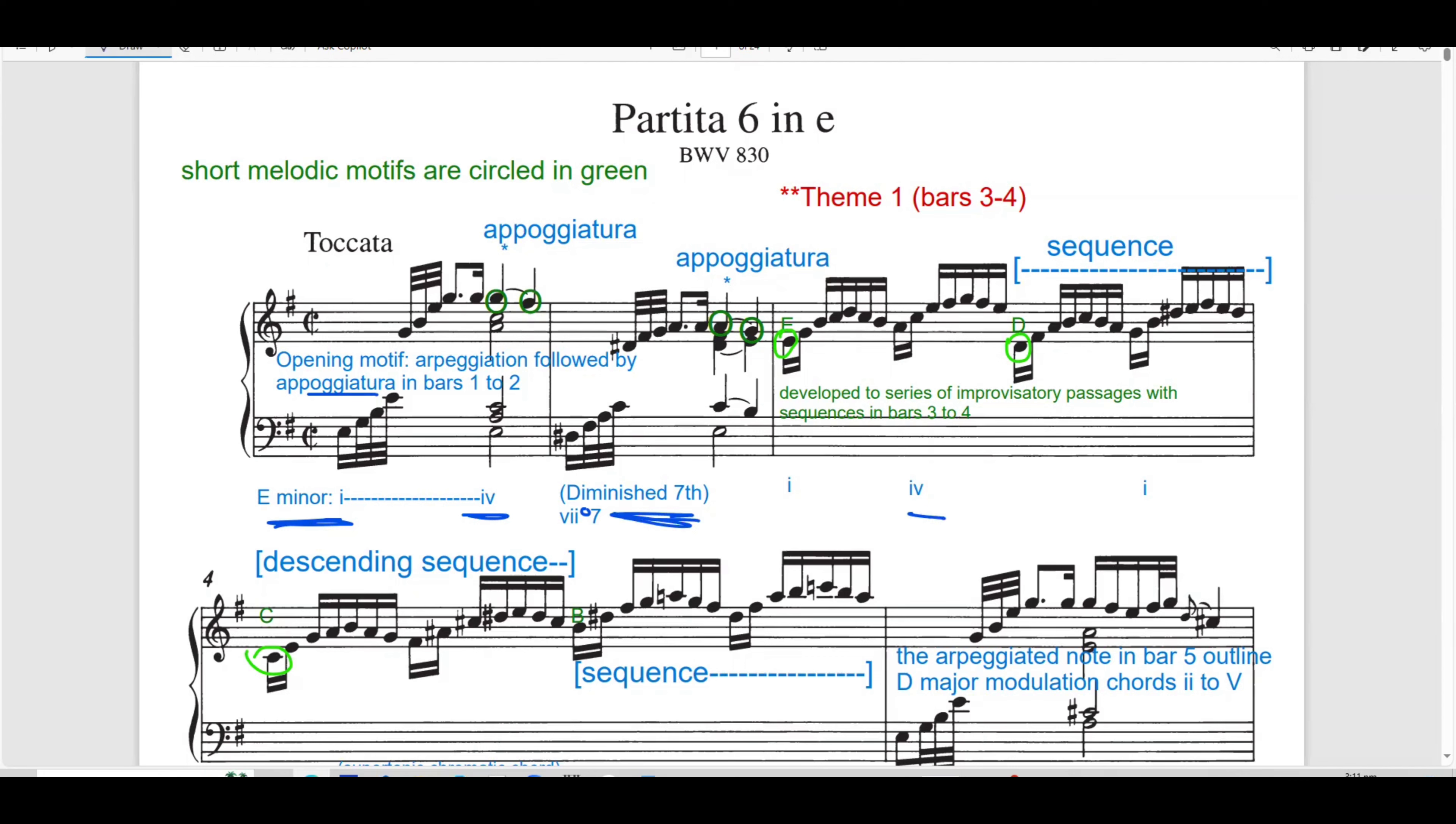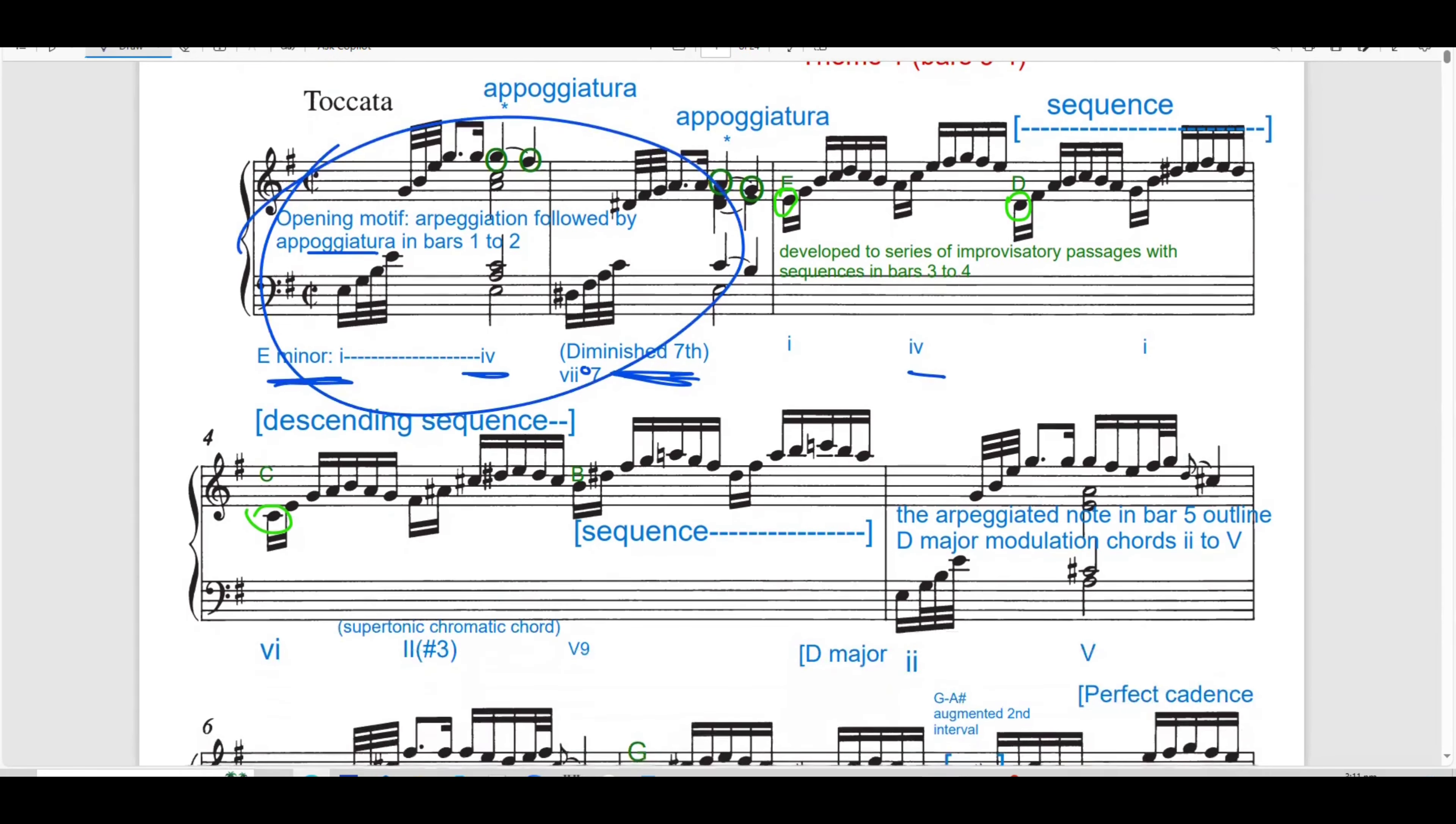And so, bar 4, chord 4, and then degree 7 chord, which create tension and anticipate further development. The initial bars interplay between arpeggios in both hands begin to suggest layers of voices, laying the groundwork for later polyphonic complexity.